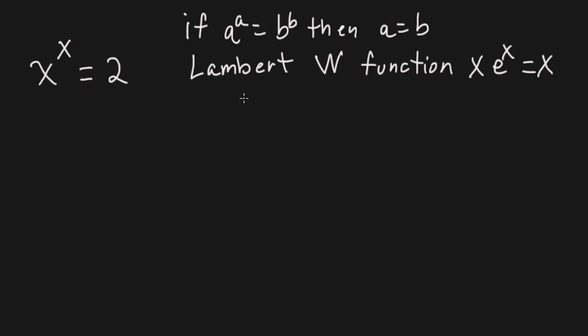Okay. Well, to first set this up, we want to get this here into the form x e to the x is equal to c, where c is a constant. We have a constant on this side already, so we have to change this into x e to the x.